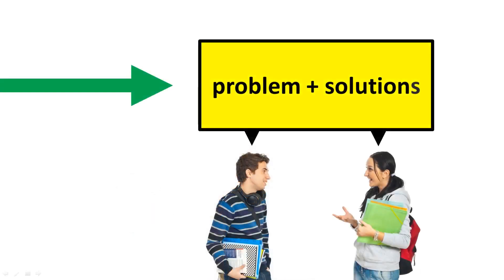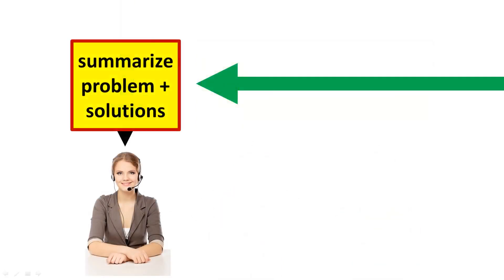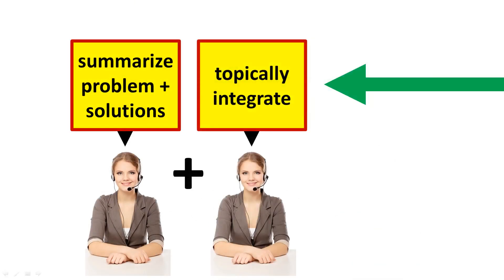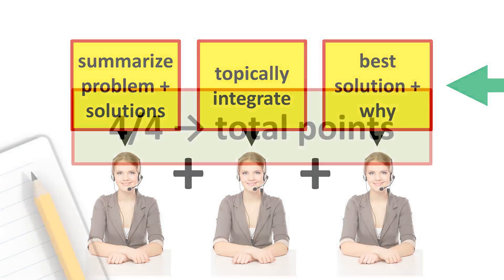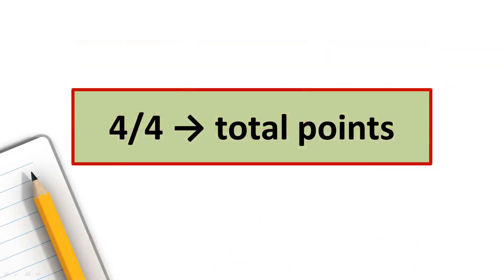In the listening, two students will discuss a problem and the solutions to the problem. When you speak, you will summarize the problem and the solutions, show how they topically integrate, then explain which solution you think is best and why. This task is scored out of four total points.